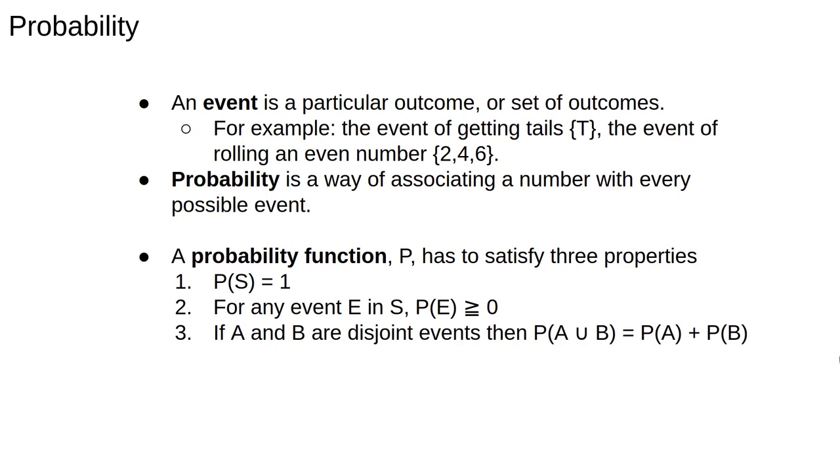So let's break these down and translate them into English. The first rule says that the probability of getting any result is 1. This just means that something has to happen in the experiment, and fundamentally it means that the sample space contains all the possible outcomes. The second rule says that you can't have negative probabilities, although 0 is allowed for impossible events.